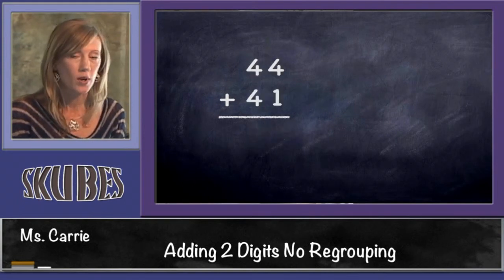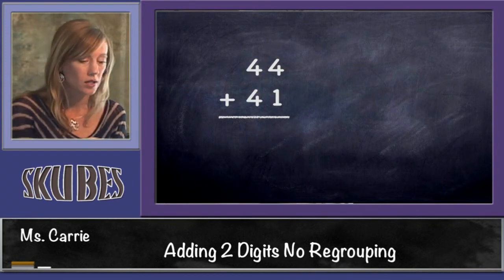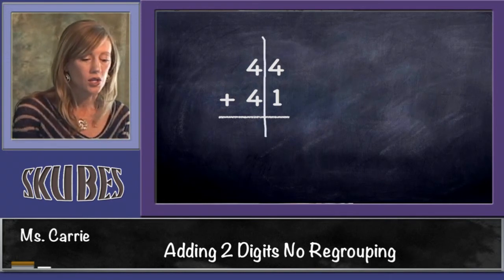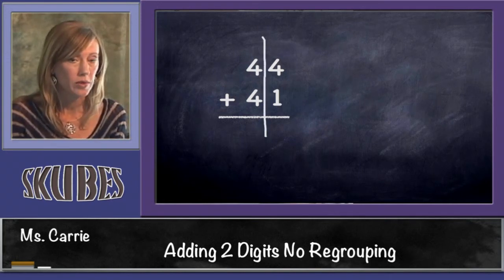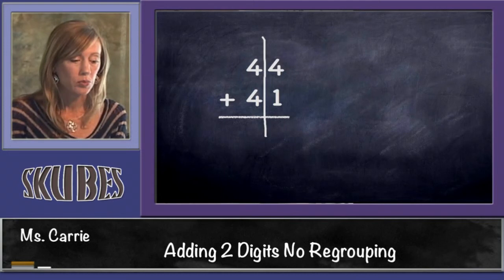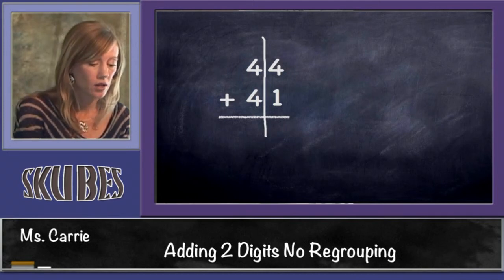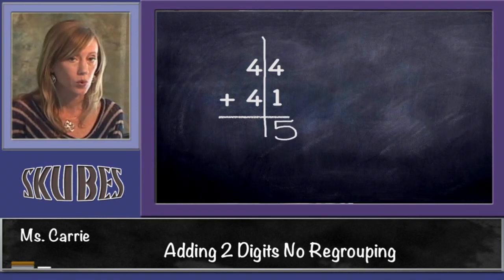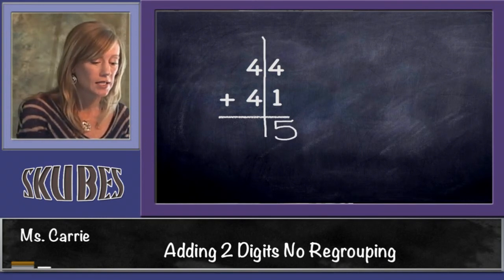Let's look at one last problem. This is 44 plus 41. Draw our line. Start in the ones column. We're going to start with 4 because it's bigger. Four plus 1 more is 5. And in the tens column, we're going to add 4 plus 4, which we know is 8. And our answer is 85.